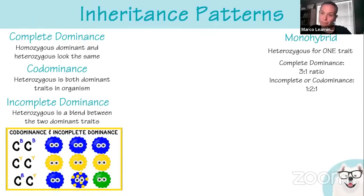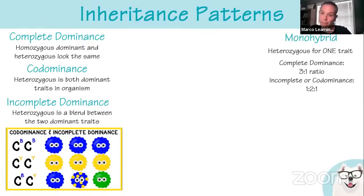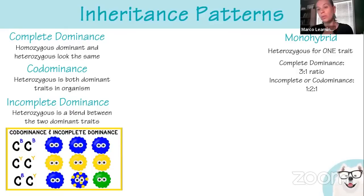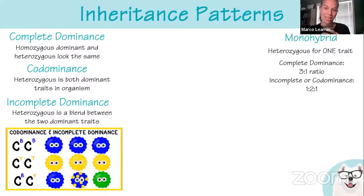You'll often see monohybrid or dihybrid crosses on the exam. A monohybrid involves looking at a heterozygous at one trait. For complete dominance, the ratio is 3:1 — three showing the dominant allele, one showing the recessive. For incomplete dominance or codominance, we see a 1:2:1 ratio. For a dihybrid cross with complete dominance, it's 9:3:3:1. For incomplete or codominance in a dihybrid, the ratios extend accordingly.